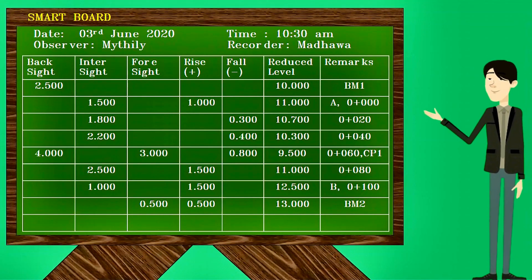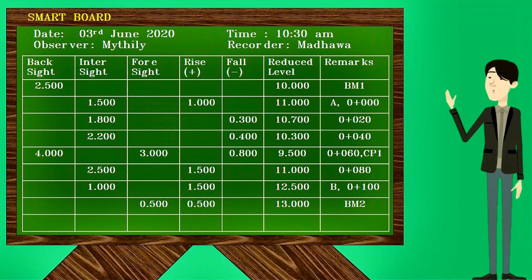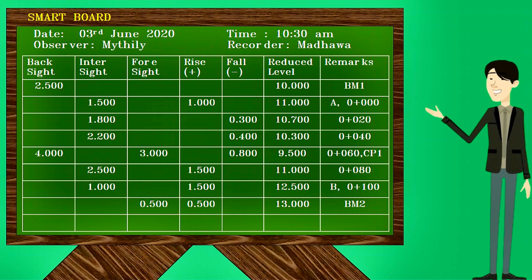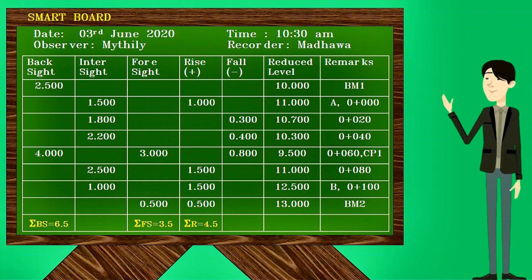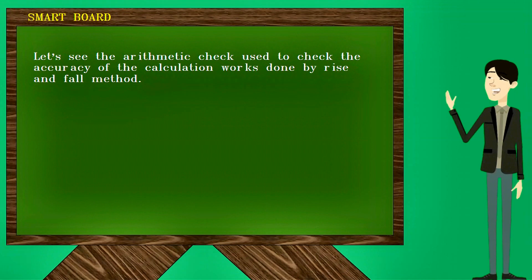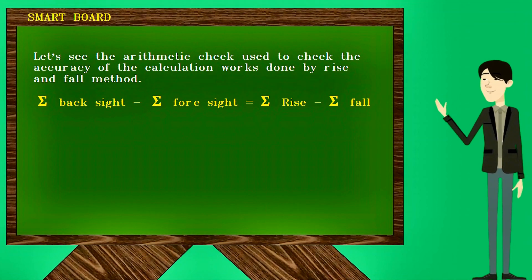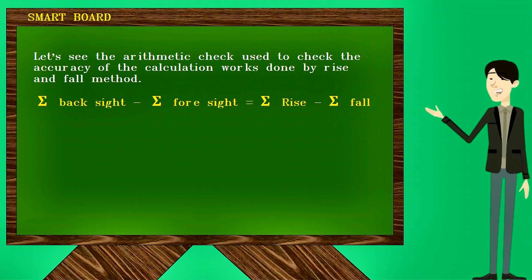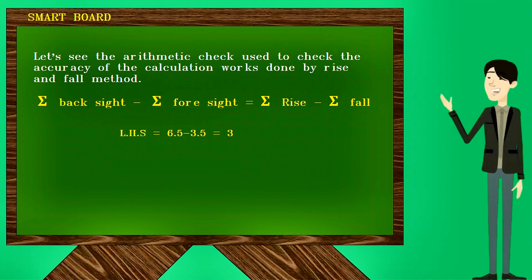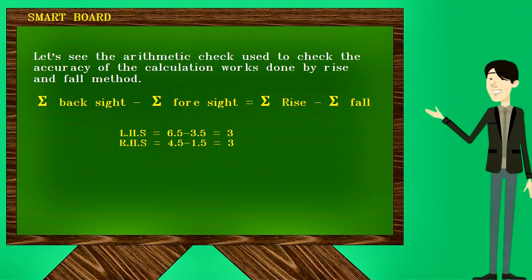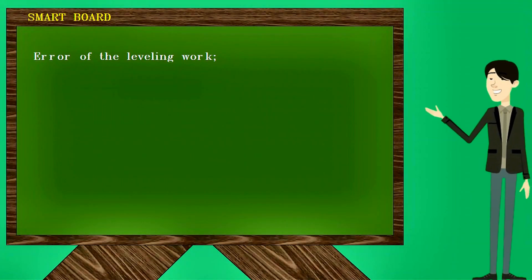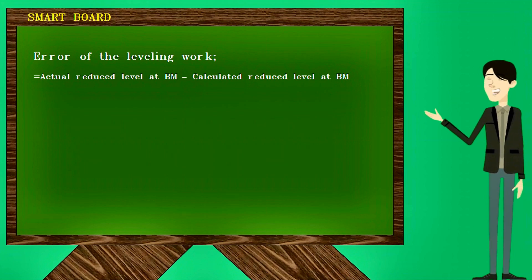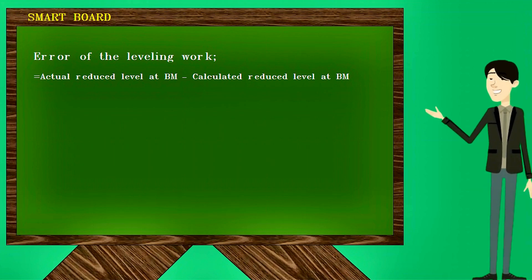Now we will see how the relevant checks are done to verify both the accuracy of calculations and the accuracy of leveling work. There is an arithmetic check: find the summation of backsight values, foresight values, rise values, and fall values. If the calculations are correct, the difference between the summation of backsight values and foresight values should equal the difference between the summation of rise values and fall values. In this example, both values are the same, therefore the calculations are correct.